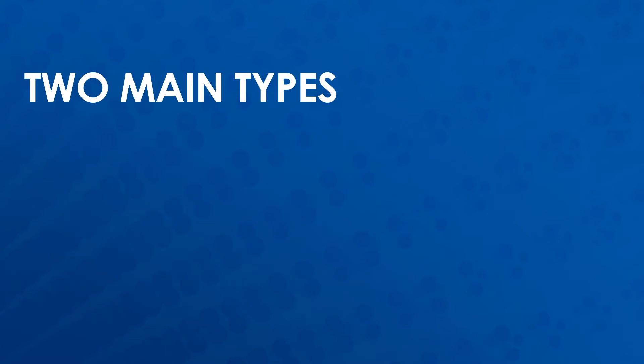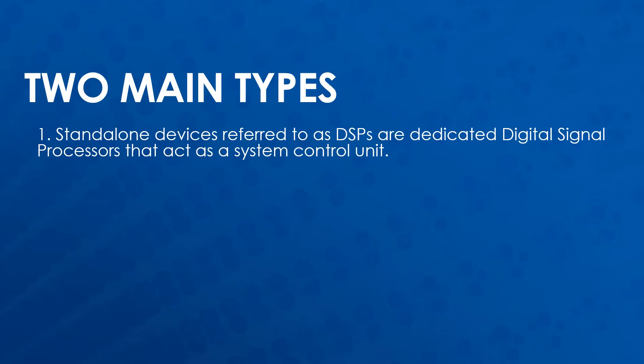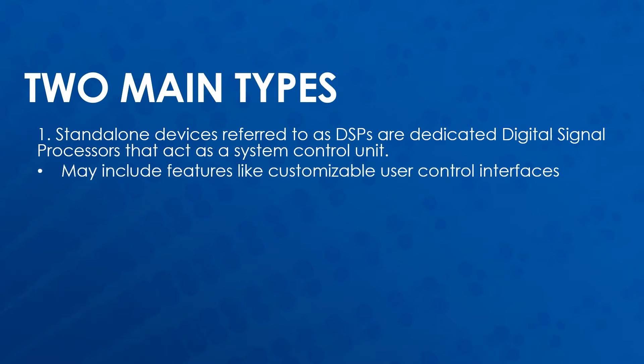DSPs come mainly in two different flavors: standalone DSP units and onboard DSP. Standalone devices, generally referred to as DSPs, are dedicated digital signal processors that act as a system control unit. These tend to be more powerful processors whose main function is to process and route audio signal from various sources to various destinations. Additional features may exist on these units to allow non-experienced users to adjust DSP parameters, such as allowing design of custom control interfaces and integrating with other control equipment.